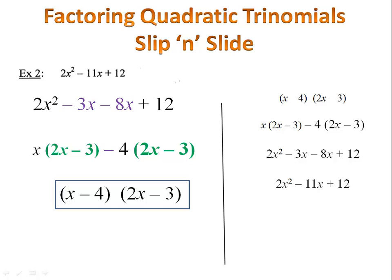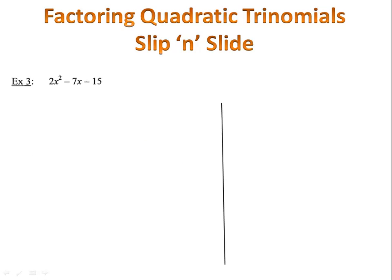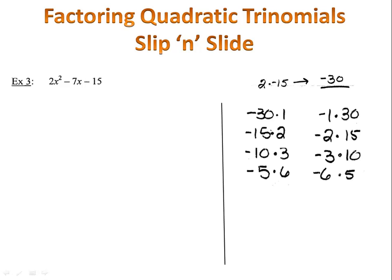Let's take a look at another example. In example 3, we want to factor the expression 2x squared minus 7x minus 15. We want to begin by multiplying the 2 and the negative 15. 2 times negative 15 is negative 30. Then, we list out all the factors of negative 30, the pairs of numbers that will multiply to negative 30.